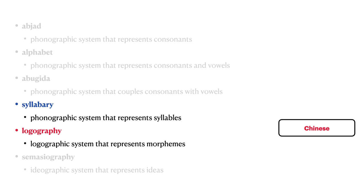Chinese is primarily a logosyllabary, a system that uses both phonographic components and logographic components. Each Chinese symbol represents a morpheme that also happens to represent a syllable.